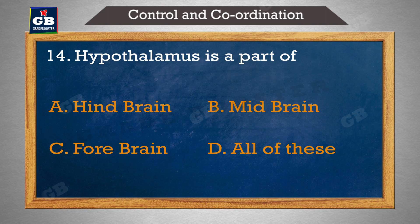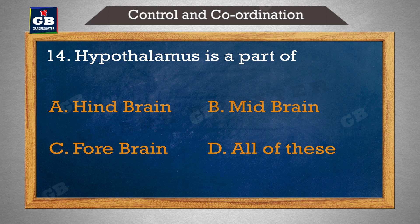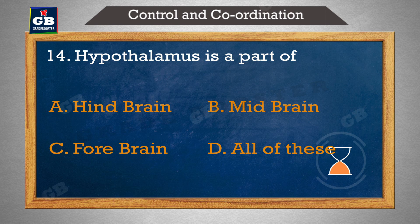Hypothalamus is a part of — hypothalamus iska yek hissa hai: A) hindbrain, B) midbrain, C) forebrain, D) all of these.